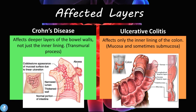Regarding the affected layers: in Crohn's disease, this disease affects deeper layers of the bowel wall and not just the inner lining, and therefore it is called a transmural process. It affects all through the bowel wall — the mucosa, the submucosa, the muscular layer, and the serous layer — and can actually break through the serous layer.